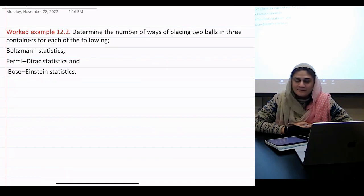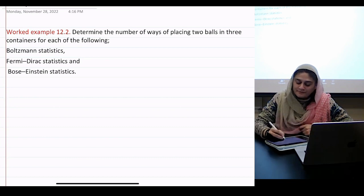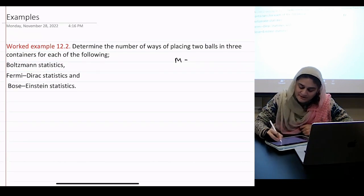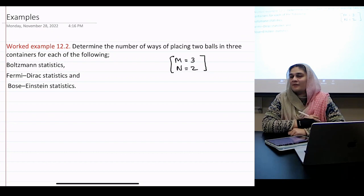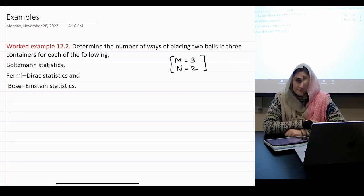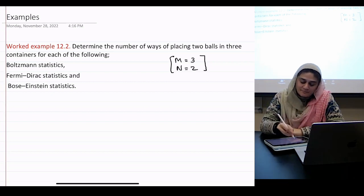Okay, so what is my n and what is my m? My m is? And my n is? Do I have equations? I just gave you those equations, right? So how will I do for Boltzmann statistics? What's the formula?